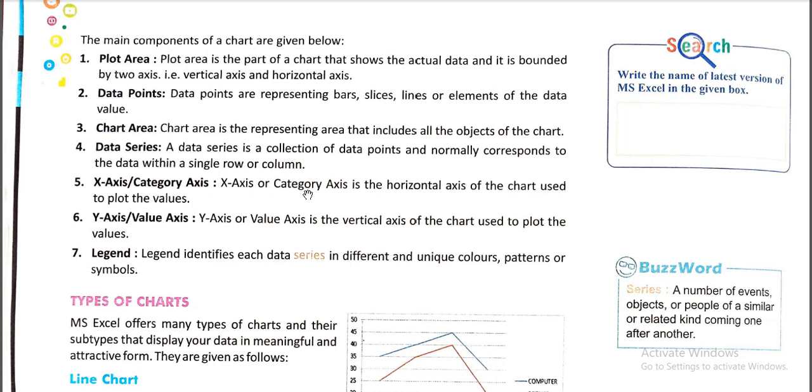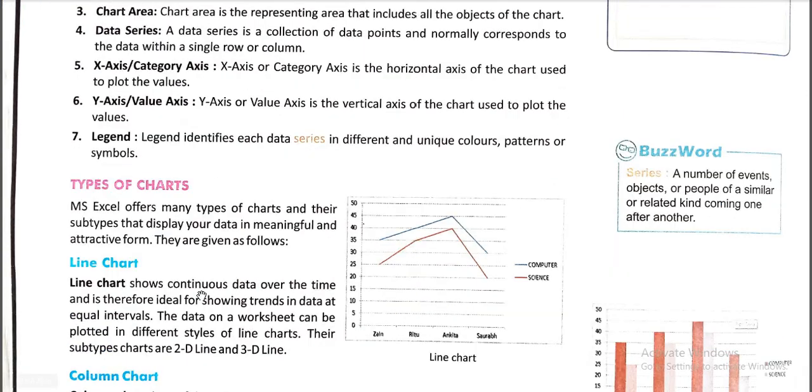Fifth point is X-axis or categories axis. X-axis or categories axis is the horizontal axis of the chart used to plot the values. Next point, Y-axis or value axis. Y-axis or value axis is the vertical axis of the chart used to plot the values. Seventh point, legend. Legend identifies which data series in different and unique colors, patterns or symbols.